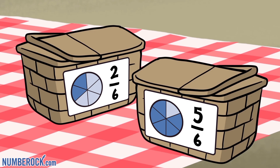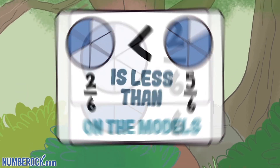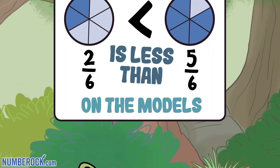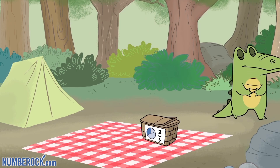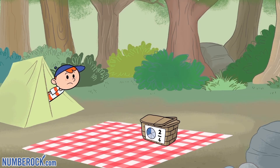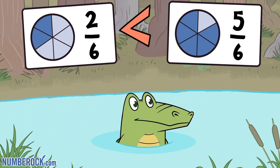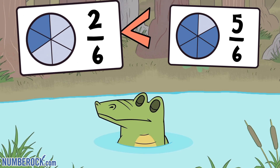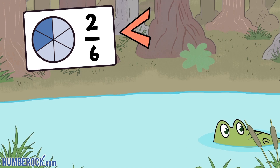2/6 and 5/6 — the great affection is the one the alligator picks. 2/6 is less than 5/6 on the models, so he eats 5/6 and away he waddles. The fraction that is greater gets eaten by the alligator. The fraction that is least is never part of his feast.